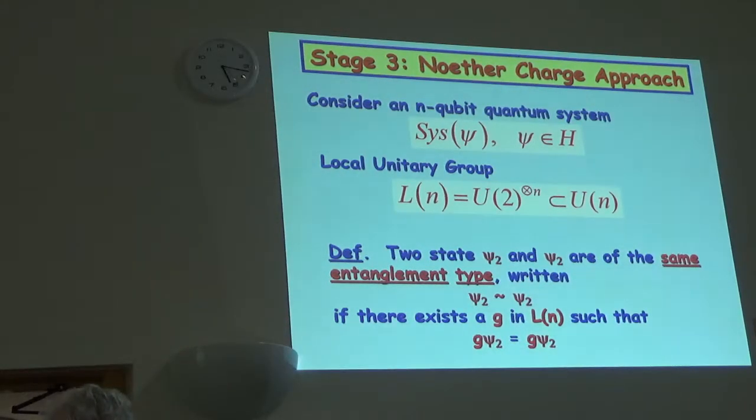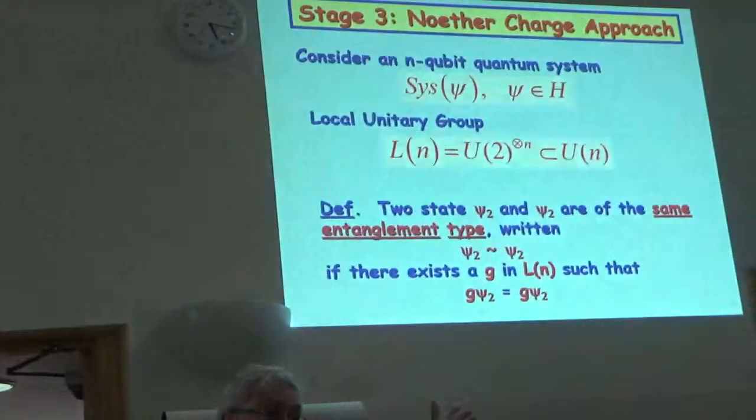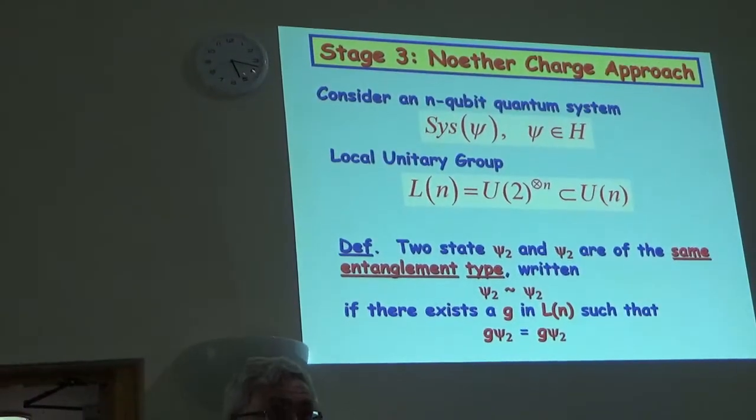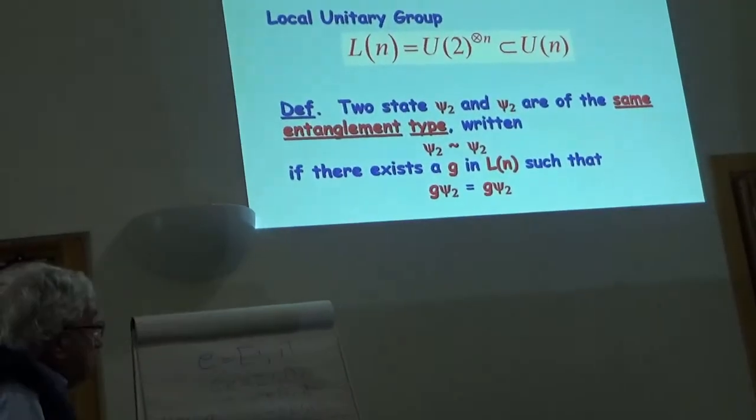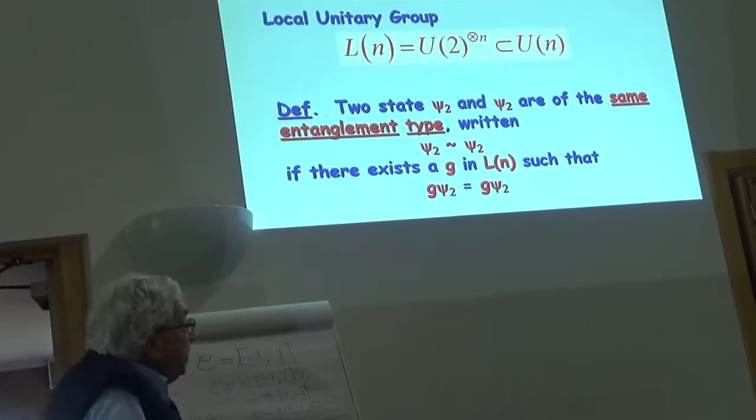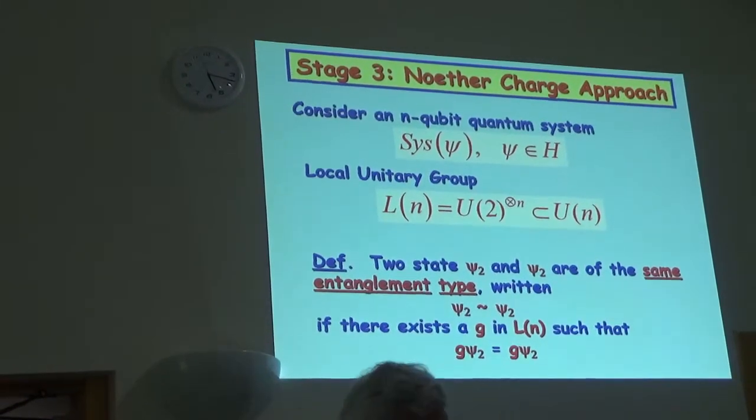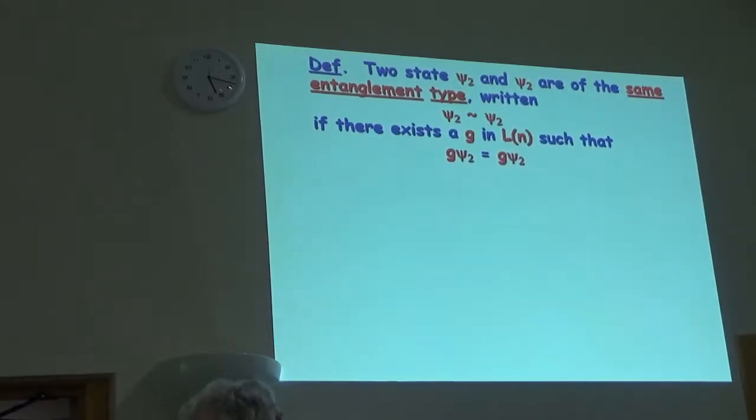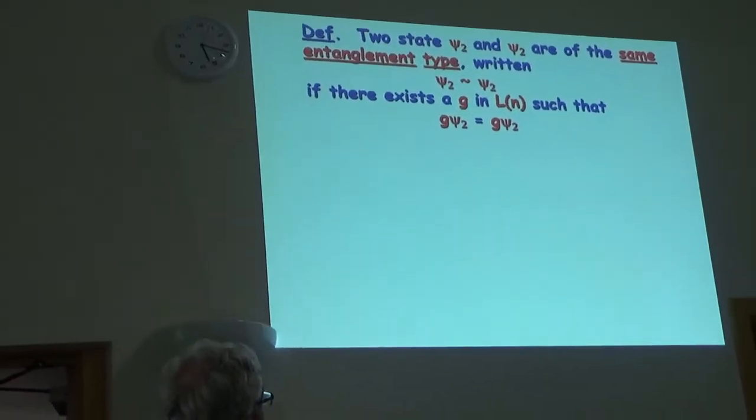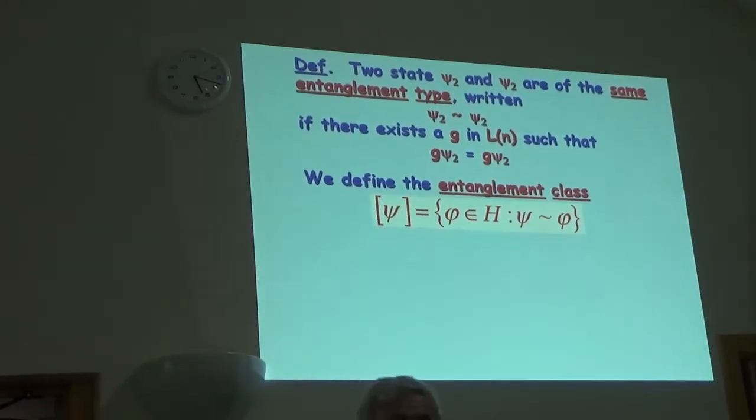Two states, we say, have the same entanglement provided we go from the two states, one to the other, by applying only local operations. So this is the equivalence relation, if and only if there exists a local transformation which takes one to the other. So if we have an Alice, each qubit, each Alice is allowed to apply a unitary transformation to her qubit and we end up the same amount of entanglement. Two states, psi one and psi two, are of the same entanglement type. I'll just give that definition. We define the entanglement classes following this relation. Essentially, what we're studying is these classes and we'd like to find invariants which define a complete set of invariants which define these classes of states.